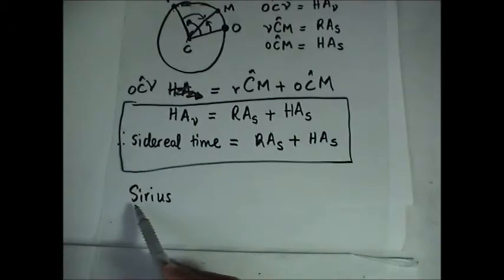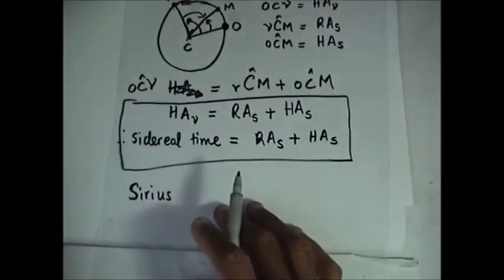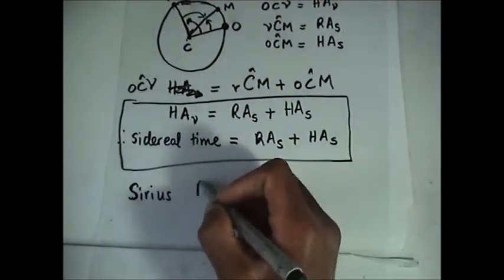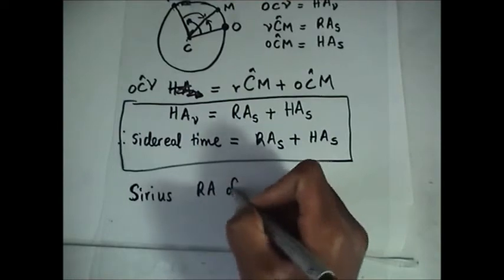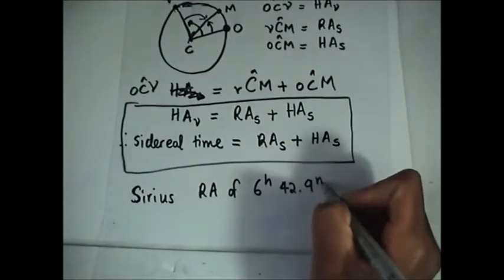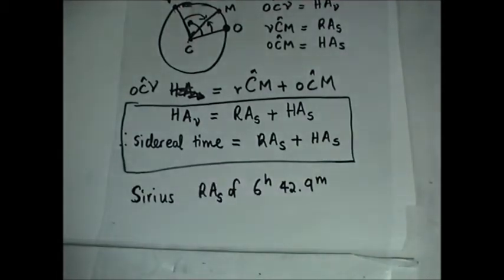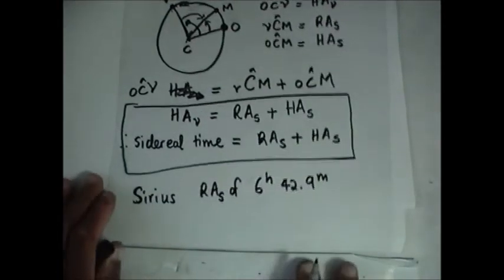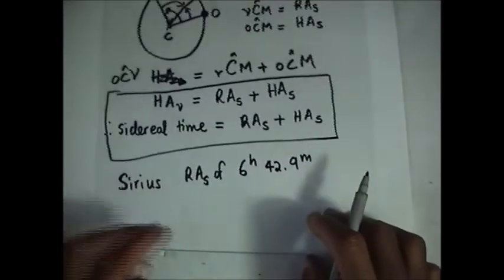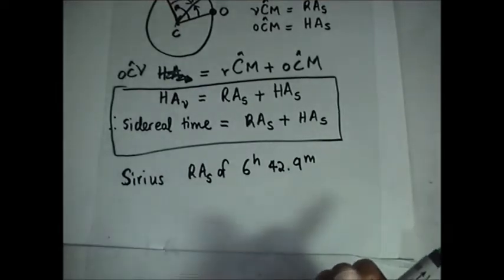Let's now get into an example. The star is Sirius — I think it's pronounced Sirius or Sirias; forgive me for that. We are told it has a right ascension of 6 hours 42.9 minutes. So the right ascension of that star equals 6 hours 42.9 minutes.